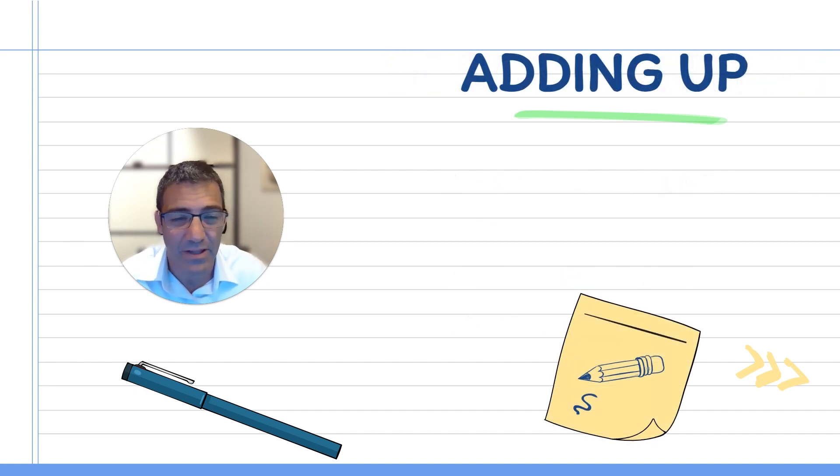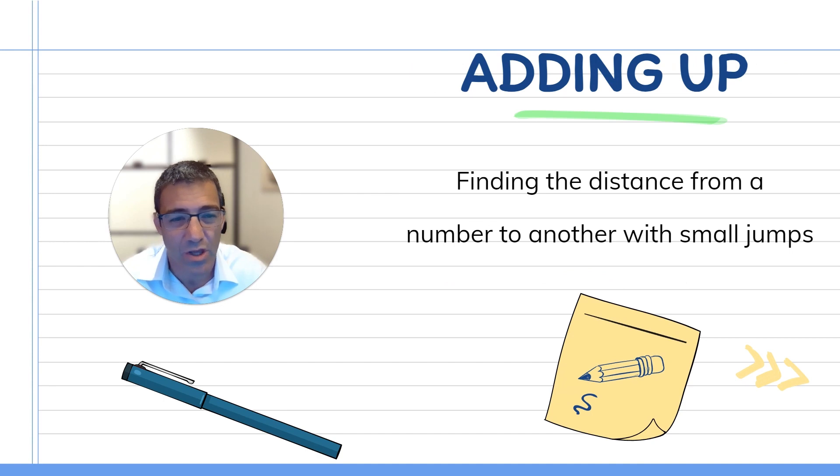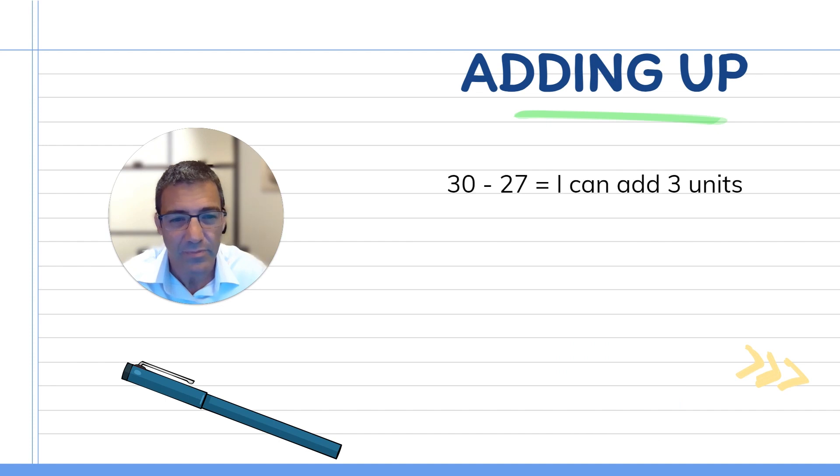Adding up now, this is another strategy that you can use, which is finding the distance from a number to another with small jumps. I think a lot of adults do this and so it's important for our children to learn how to do this as well. For example, 30 minus 27, naturally speaking, we can see that we need to add three to the 27 to get to 30, because it's just three away in the units. So this is pretty obvious.